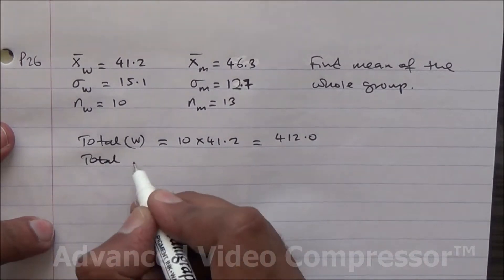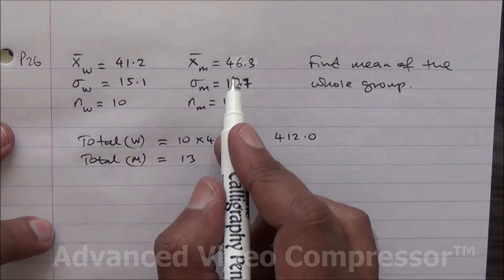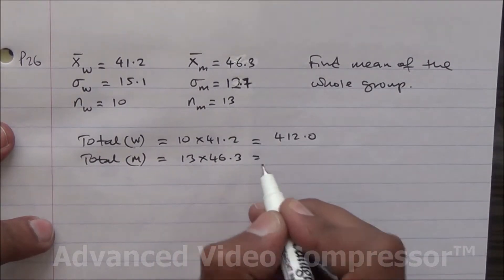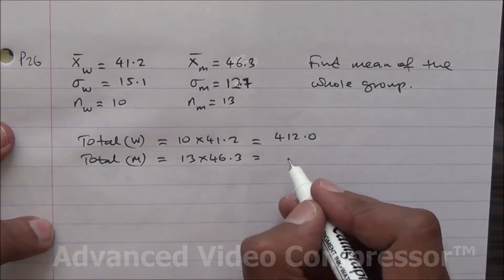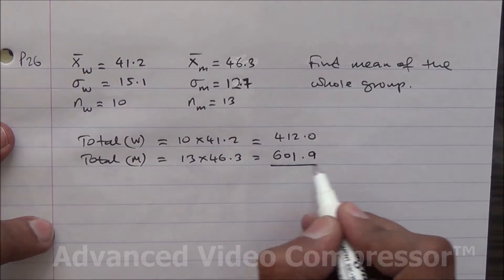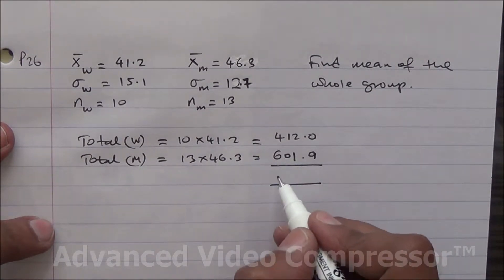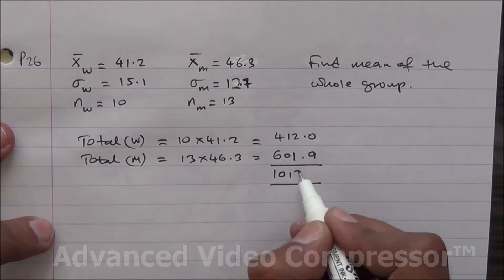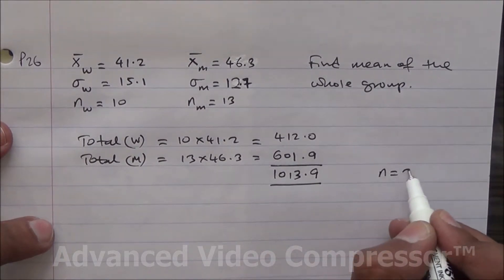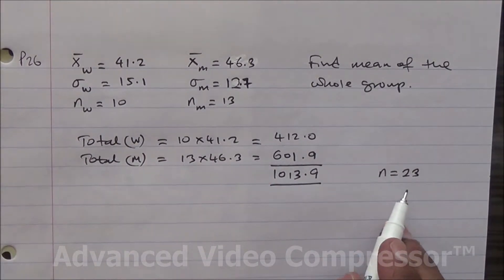The total age for the men: we have 13 of them, times the mean 46.3, and that gives us 601.9. If you do the sum for the men and women's ages, that comes up to 1013.9. Remember, we have 23 people in all — 10 plus 13 is 23.